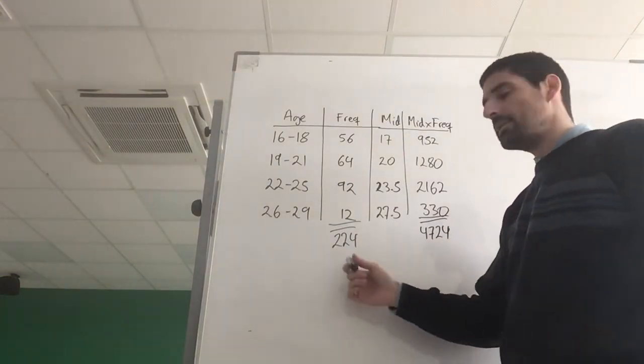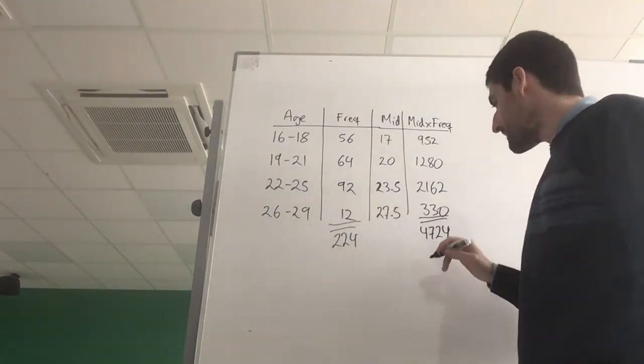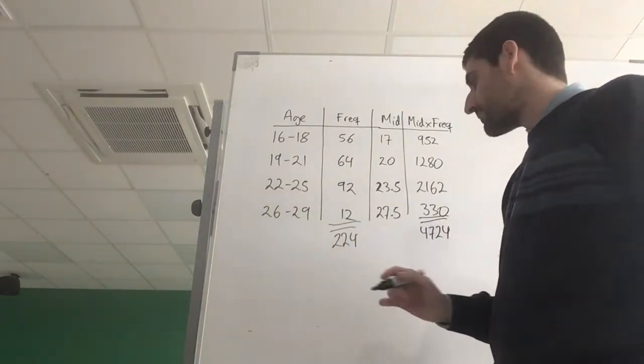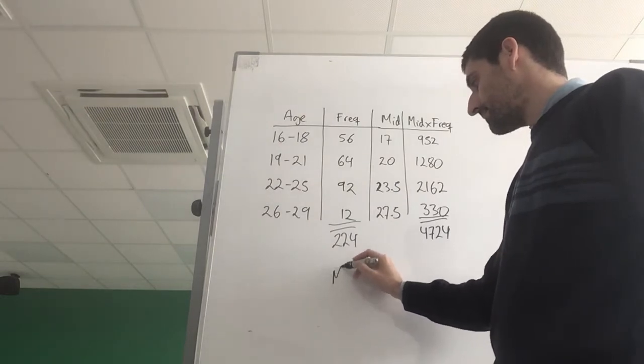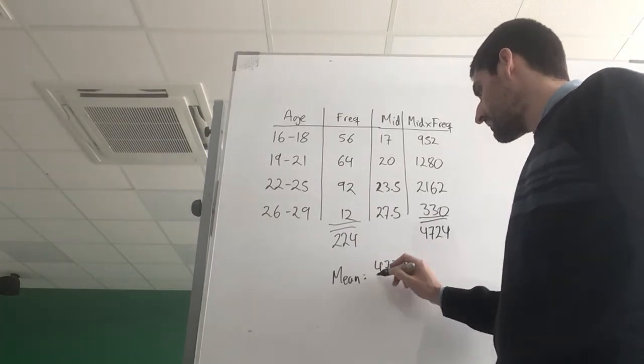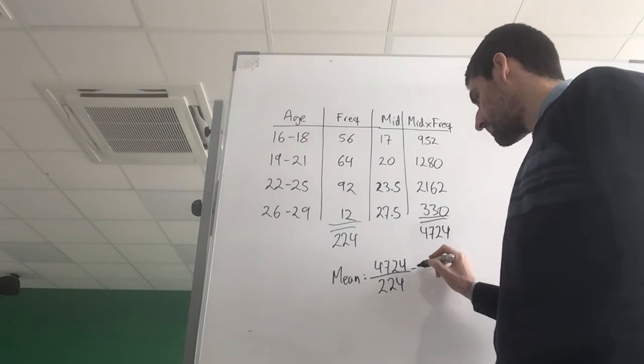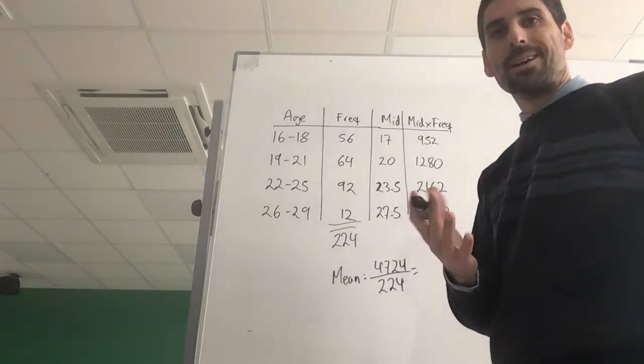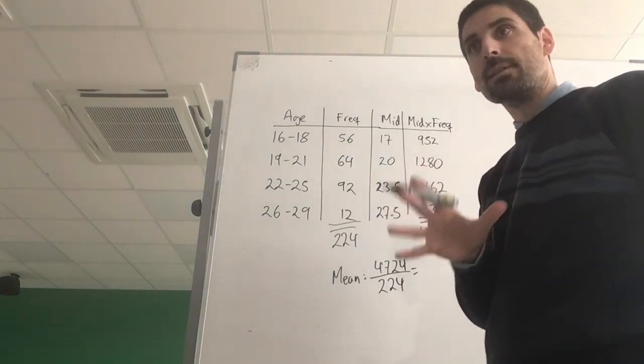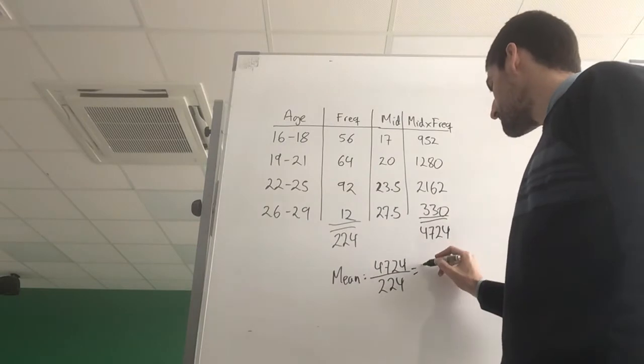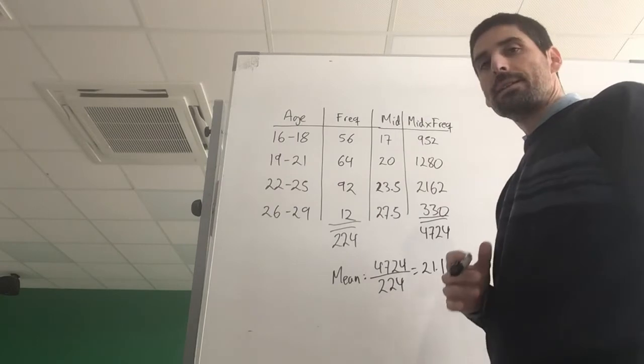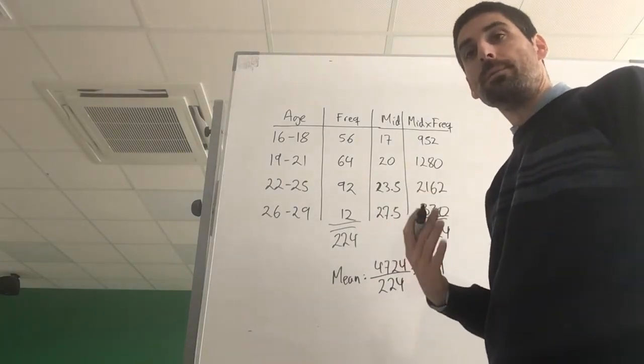Add them all together: 4724. So the total of the ages of these 224 people added together is 4724. So my estimate for the mean is going to be 4724 divided by 224. Give my answer rounded to one decimal place. Watch out in the exam whether it's one, two, or significant figures. In this case I'm going to do it one decimal place: 21.1. And that's how we found the modal class and the mean from a grouped data table.